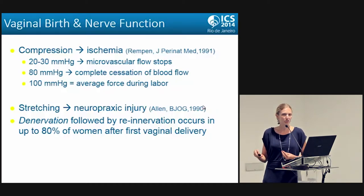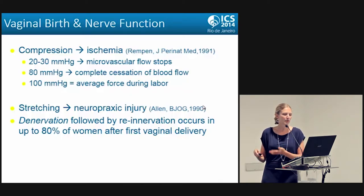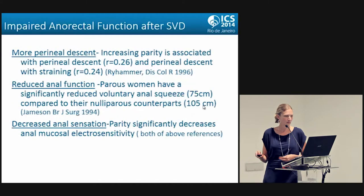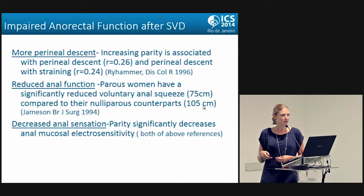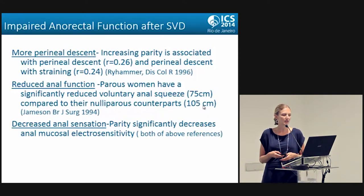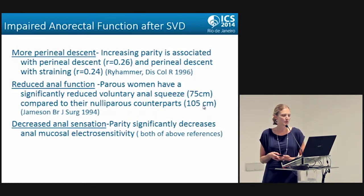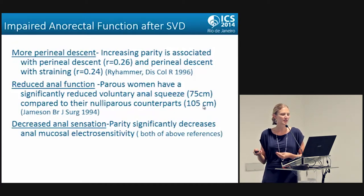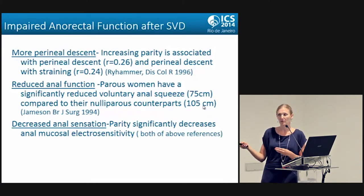Stretching can also lead to neuropraxic injury, and we know that denervation followed by re-innervation occurs in up to 80% of women following their first vaginal birth. There is impaired anorectal function after spontaneous vaginal birth, and increasing parity is associated with increasing perineal descent with straining. Parous women have significantly reduced voluntary anal squeeze pressure compared to their nulliparous counterparts, and significantly decreased anal sensation, which may relate to a prolonged recto-anal inhibitory reflex.